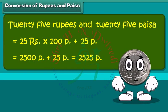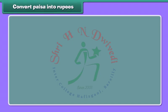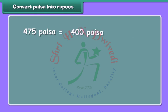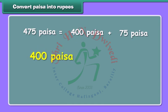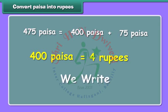Amazing! So much money! It's time to convert paisa into rupees. 475 paisa is equal to 400 paisa plus 75 paisa. As we know, 400 paisa is equal to 4 rupees. Therefore, we can write it as 4 rupees and 75 paisa.